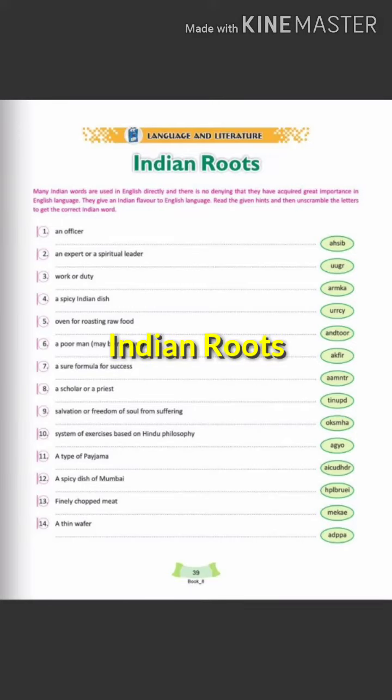Welcome to page number 39 of GK class 8. The topic is Indian Roots. There are some jumble words with hints that you can find. The first is an officer, the jumble word is sahib.